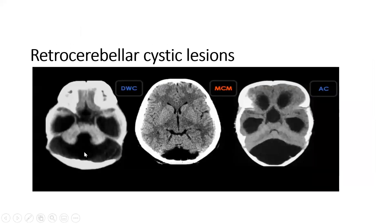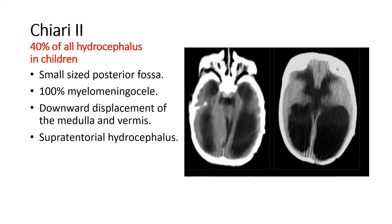Regarding retrocerebellar cystic lesions: in Dandy-Walker malformation, there is a cystic communication with the fourth ventricle and the presence of hydrocephalus is variable. In mega cisterna magna, which is a normal variant, there is no hydrocephalus. In arachnoid cysts, there is compression of the cerebellum with the fourth ventricle, causing supratentorial hydrocephalus. Chiari 2 malformation accounts for 40% of all hydrocephalus in children, with a small posterior fossa, 100% myelomeningocele, downward displacement of the medulla and vermis, and supratentorial hydrocephalus.